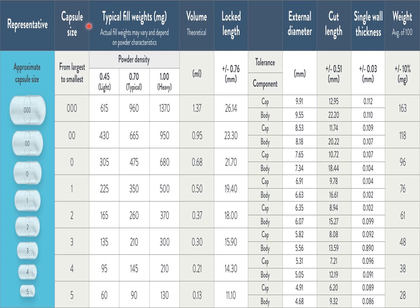The next column indicates the size from triple 0 to 5. The following column indicates the typical fill weights, which are based upon the powder density of the medicament or final mixture. Actual fill weight may vary depending on powder characteristics. For light powders, medium density powders at 0.70, and heavy powders at 1.00, these are the respective typical fill weights.